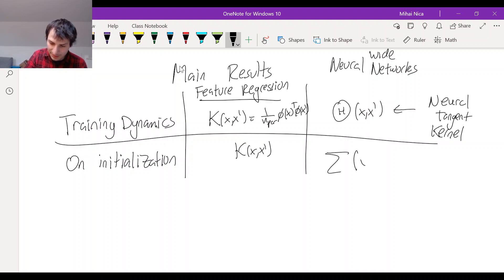And there's a different kernel, I'm going to call it sigma, which some people call the NNGP, which stands for neural network Gaussian process. So NN Gaussian process. The NNGP kernel. Some people call it the conjugate kernel. And it tells you the covariance of the network on initialization.